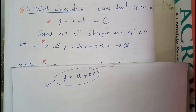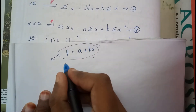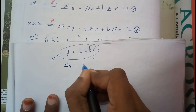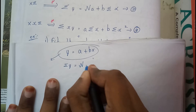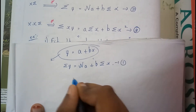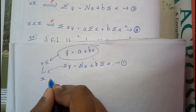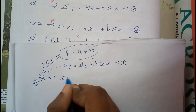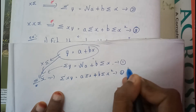To find the values of a and b, we will be normalizing this equation. Normalization means multiplying by sigma. So sigma y equals n times a plus b times sigma x — this is our first normal equation. For the second normal equation, we multiply by x, giving sigma xy equals a times sigma x plus b times sigma x squared. These are the two normal equations used to find a and b.